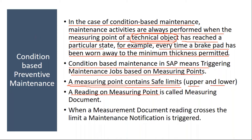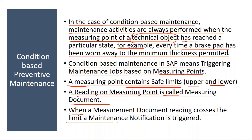A reading on a measuring point is called a measurement document. When they take the measurement — suppose they want to measure temperature — that reading is entered in the system using a measurement document. This we also covered in our master data sessions. When a measurement document reading crosses the limit, a maintenance notification is triggered.